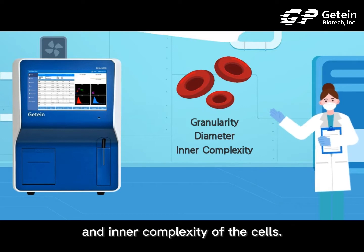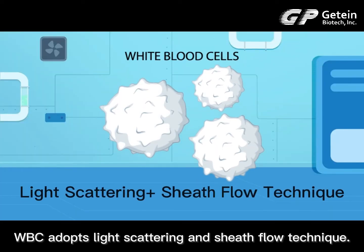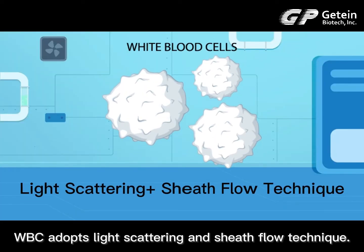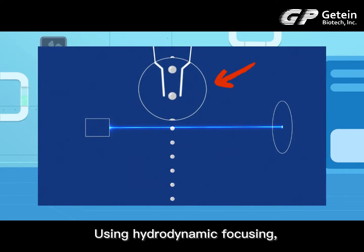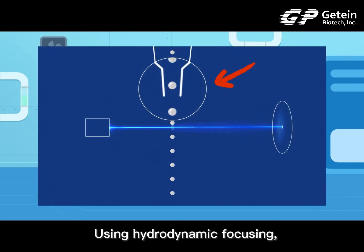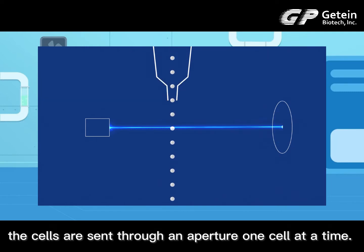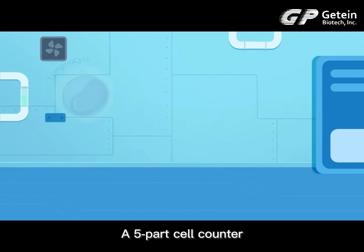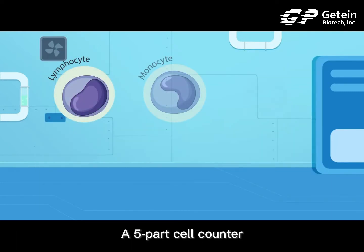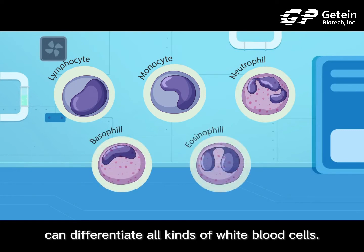White blood cell analysis adopts light scattering and sheet flow technology using hydrodynamic focusing. The cells ascend through an aperture one cell at a time. A five-part cell counter can differentiate all kinds of white blood cells.